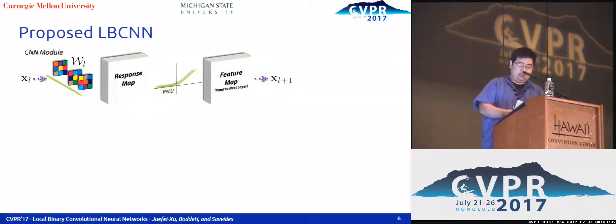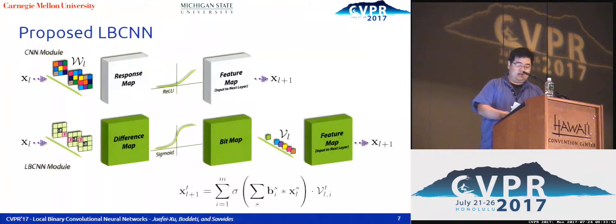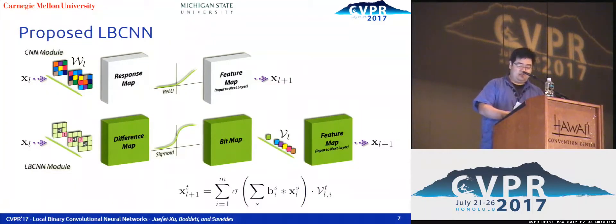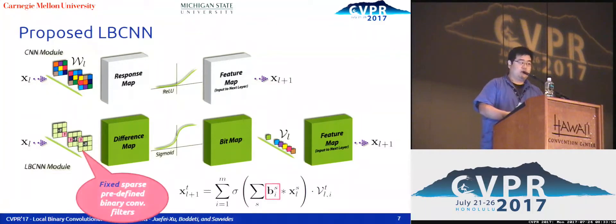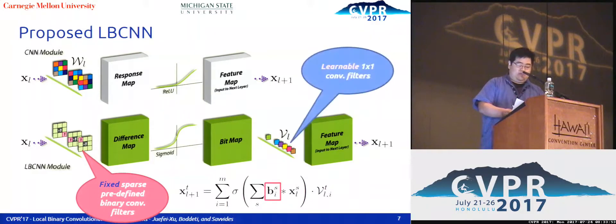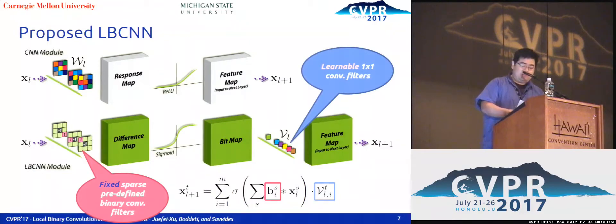In a standard CNN layer, the input volume is convolved with learnable, real-valued convolutional filters and then goes through a nonlinearity. In LBCNN, the input volume is convolved with fixed, sparse, predefined binary convolutional filters that are not learned, followed by a nonlinearity, and then we invoke learnable one-by-one convolutional filters for combining the various bitmaps as the final feature map ready for the next layer.